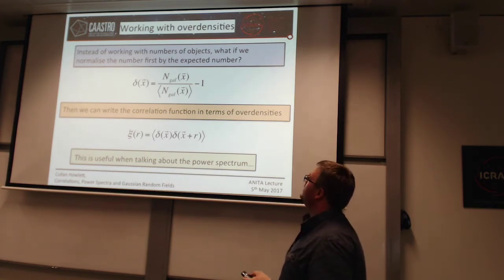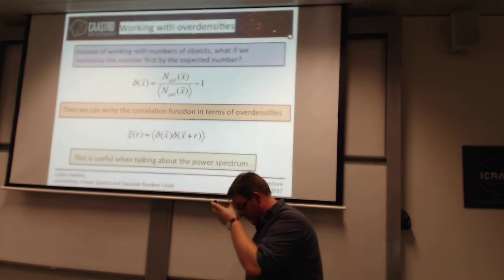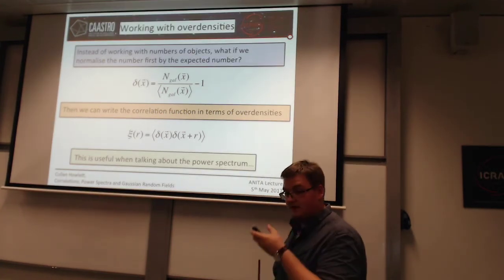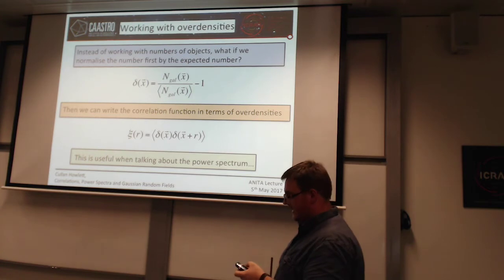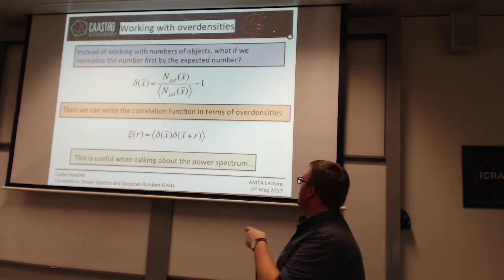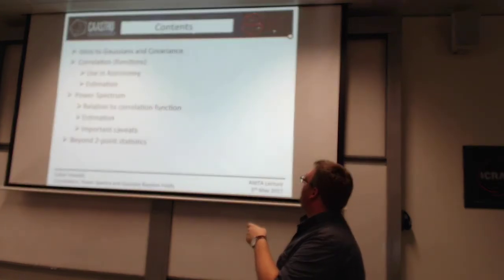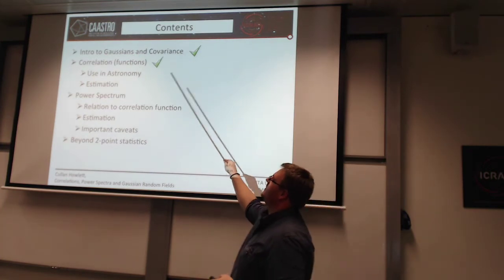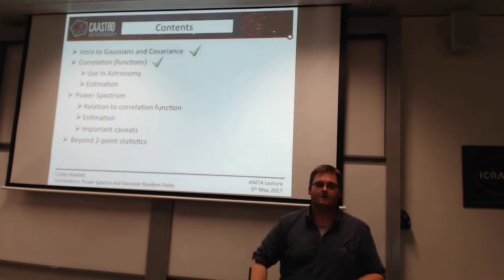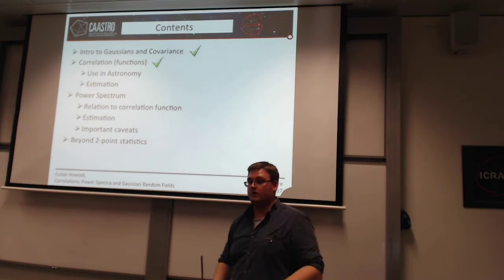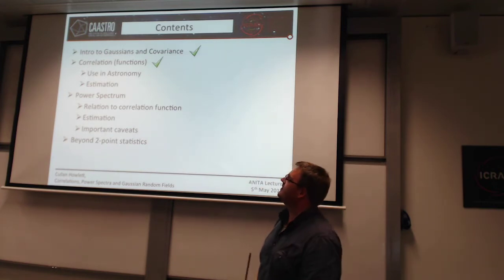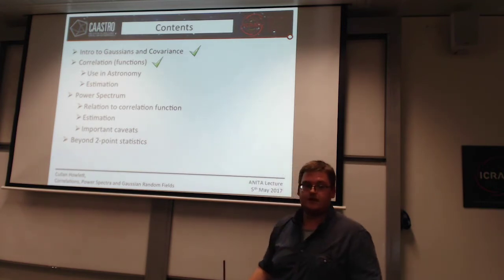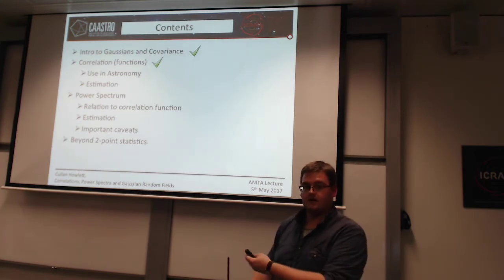So that's correlation functions — a quick primer on what they are and how they relate to covariance and the Gaussian distribution. If your data set is Gaussian, the correlation function tells you everything. Even if your data is not Gaussian, it will still tell you a lot.